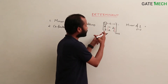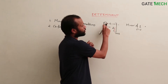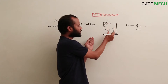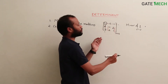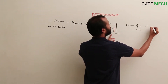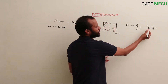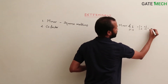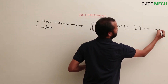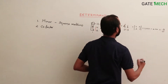The minor of 1 at position (1,1): you exclude row 1 and column 1. The remaining sub-matrix is [-1, 2 / 2, 1]. The determinant is (-1)(1) - (2)(2) = -1 - 4 = -5.